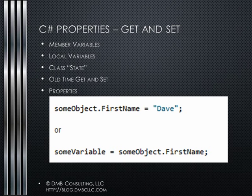The compiler does for us what the old timers did and the Java guys still do using get method and set method. As it turns out, we need all that gatekeeping. But the fact of the matter is, many times we don't. When I was teaching, I'd have guys say, if I don't need the gatekeeper, then why even bother with the properties? Which is kind of a valid point.